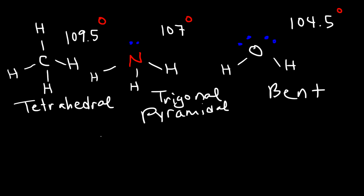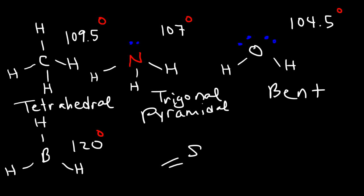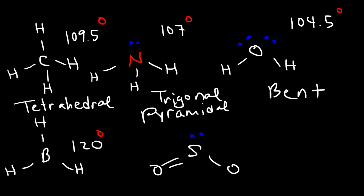For the trigonal planar structure, using BH3 as an example: boron is attached to three atoms, so the bond angle is 120 degrees. Similarly, SO2 has one of those atoms replaced with a lone pair — sulfur is attached to two atoms and a lone pair, so you still have three things around it, meaning the bond angle is close to 120, but not exactly 120 — it's a little bit less.